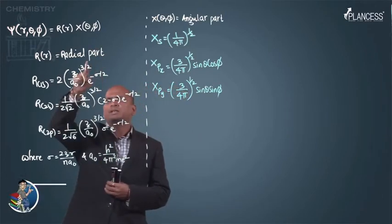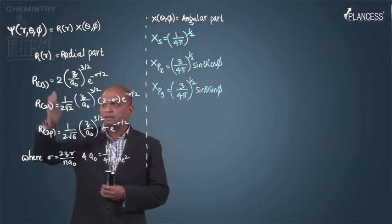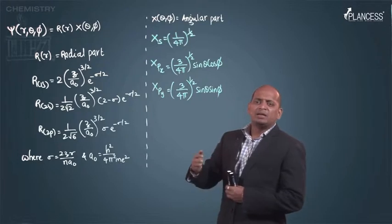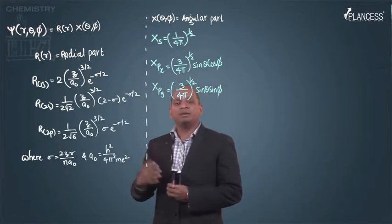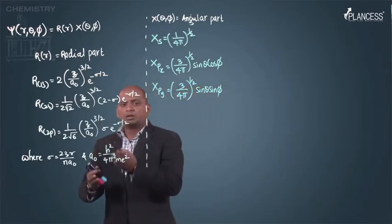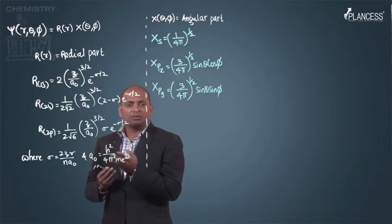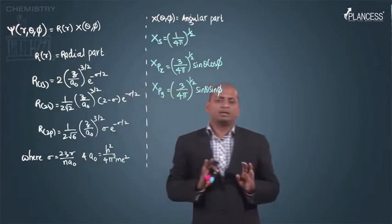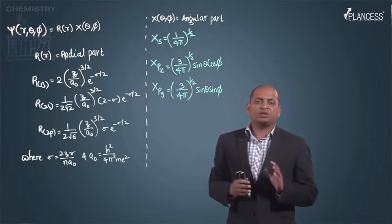This is the radial part, and these are the equations we are getting by solving Schrödinger wave equation. Now, if you see here, this is like a mess. How can we remember these equations? Not required at all. It is just for the knowledge.